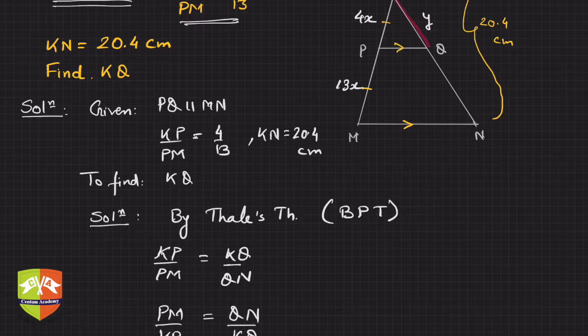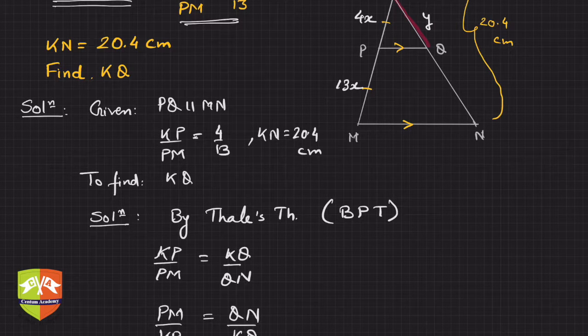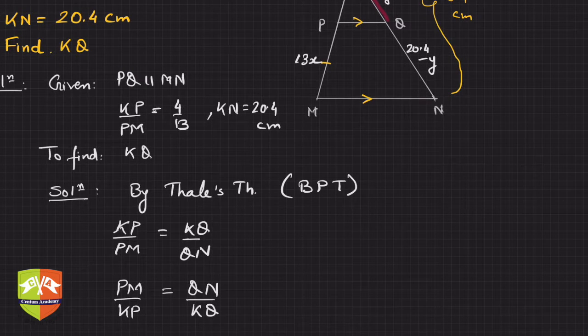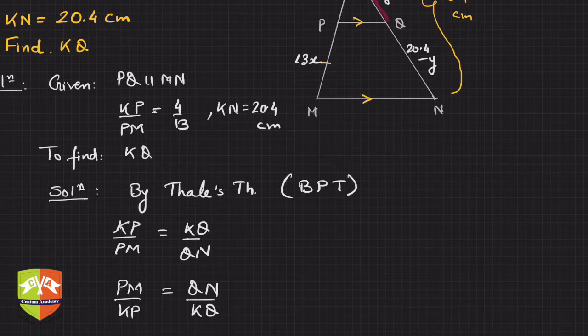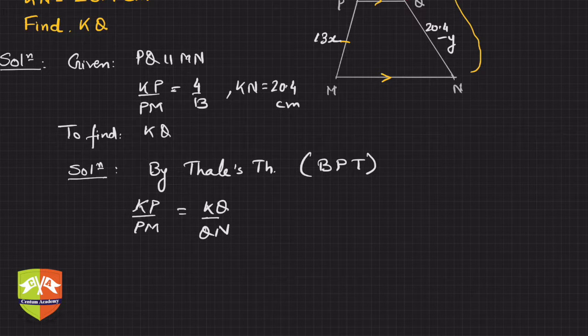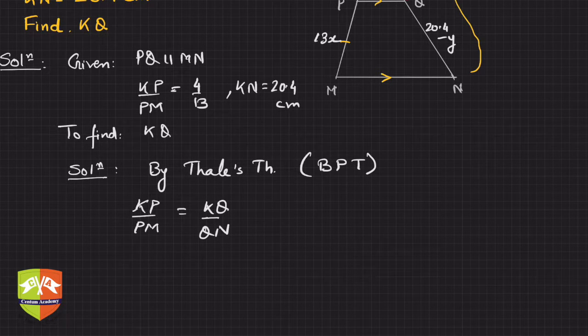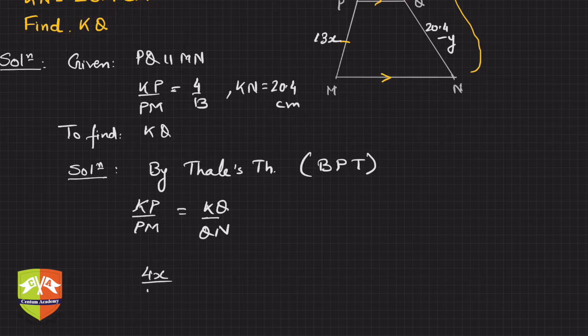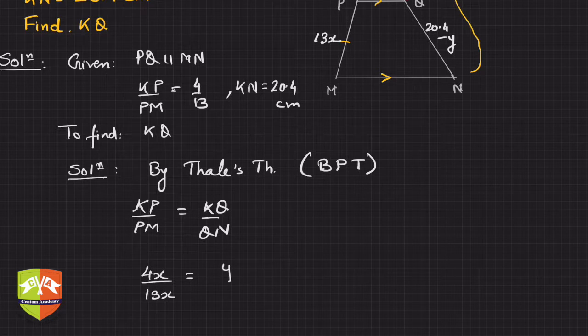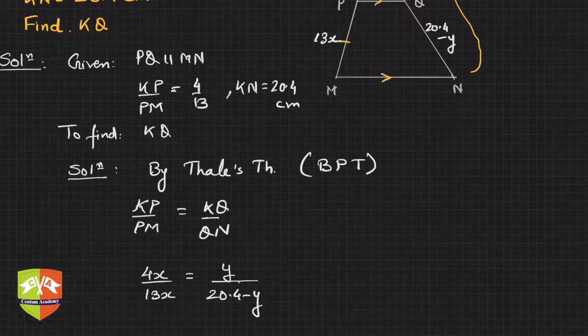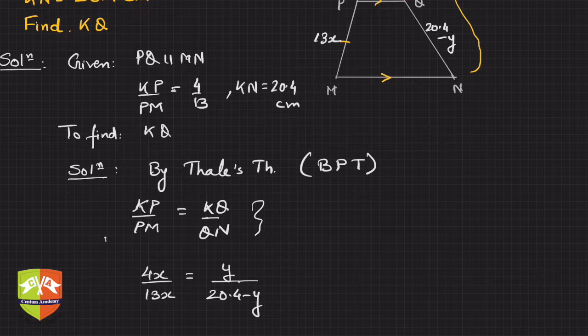We have to find out KQ, right? So let's say KQ is y. So clearly, QN is 20.4 minus y. You can write it here, and then simply apply Basic Proportionality Theorem. So what will this result be? We can say 4x upon 13x is equal to y upon 20.4 minus y.